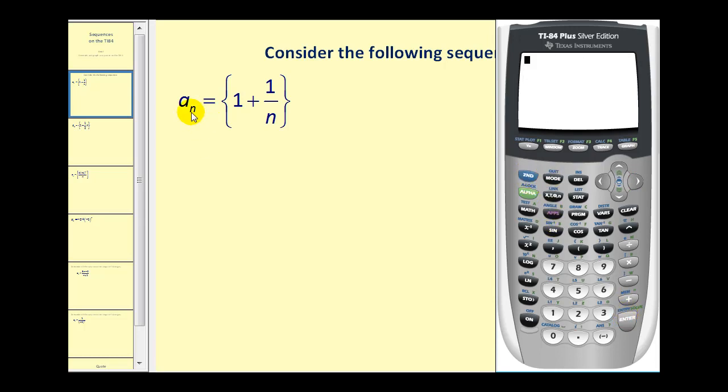Let's show how we can generate the first ten terms of the sequence from the home screen. If we press second stat, which brings up the list menu, and then right arrow once to ops, option five is for sequence, so we can just press five, and this comes back to the home screen. Next, we're going to type in the formula, one plus one over n.